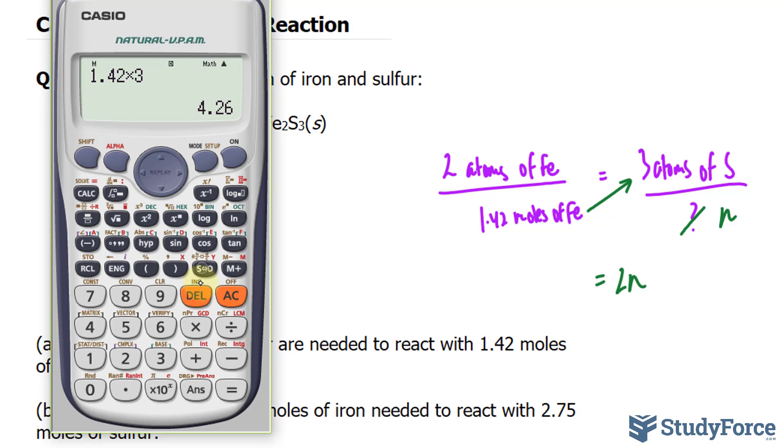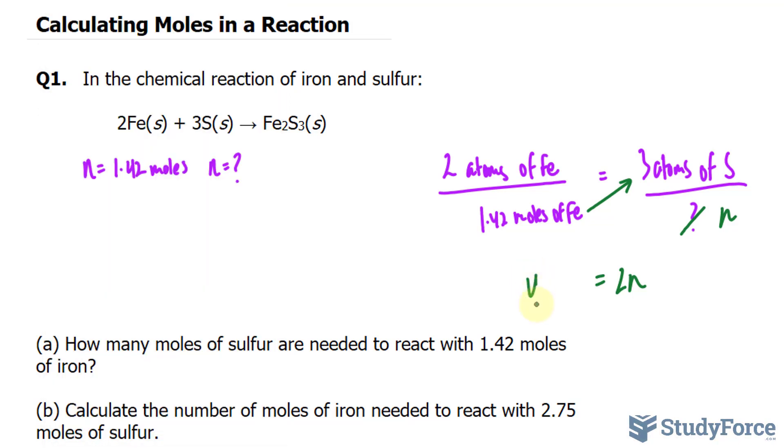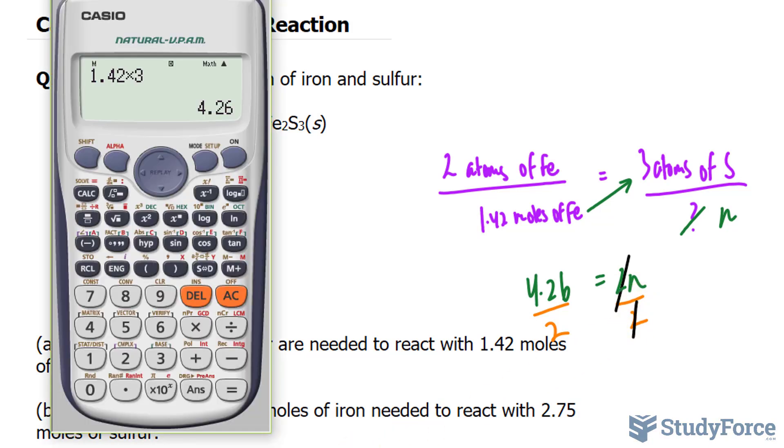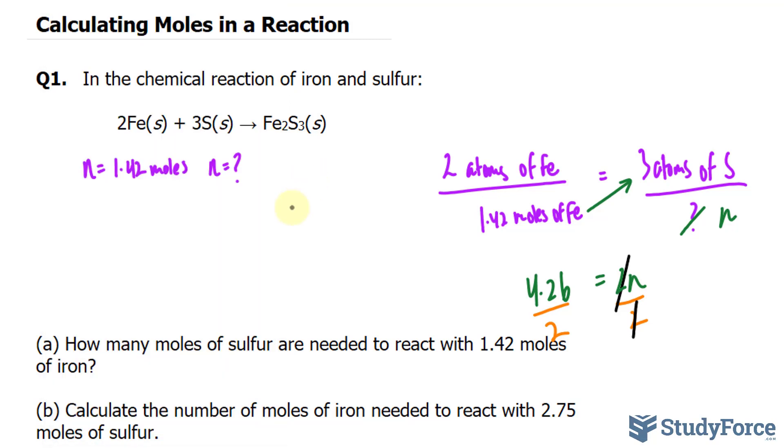And on the left side, we have 4.26. To solve for N, we divide both sides by two. Watch this. The two cancels out. And dividing this number by two gives us the amount of moles of sulfur, 2.13. So N is equal to 2.13 moles.